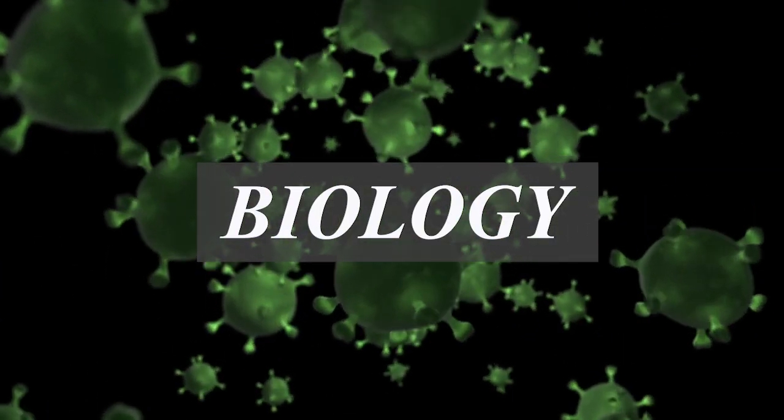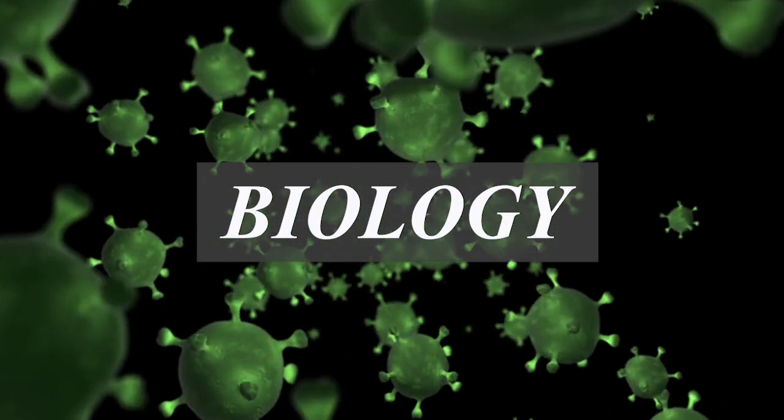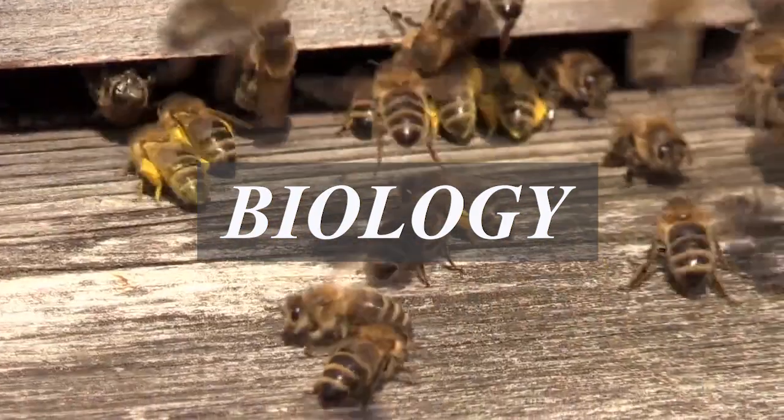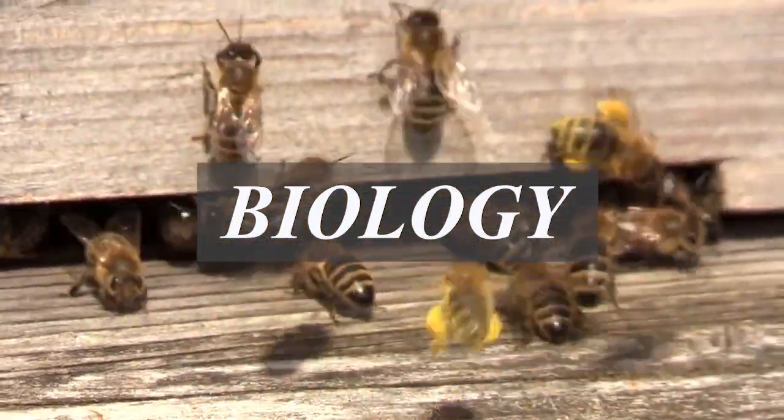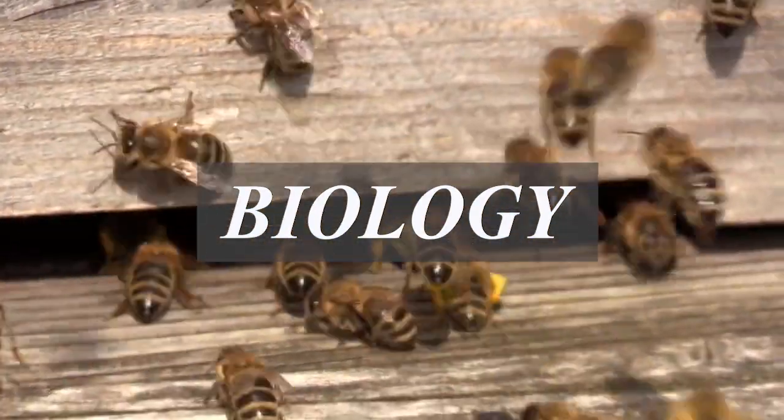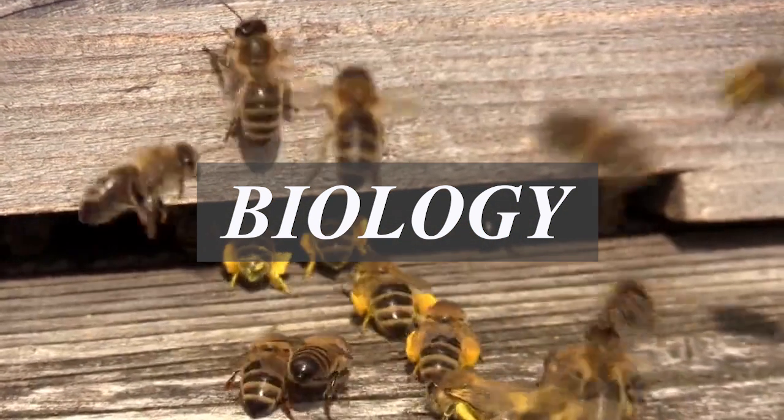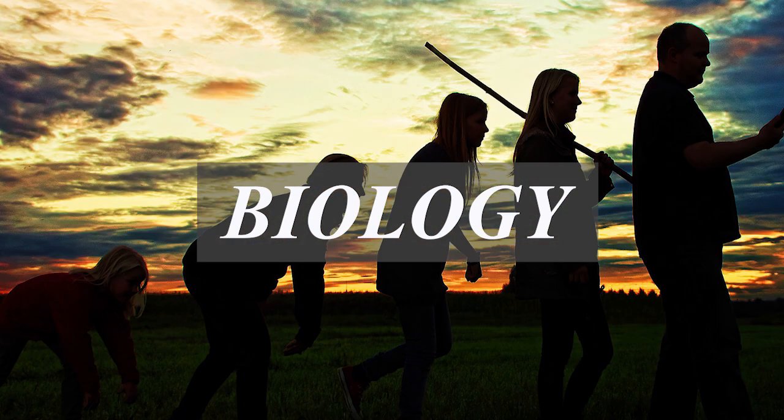In biology, there have been numerous incongruous behaviors. For example, consider the case of worker bees that slog their entire life to nourish the queen bee and never mate. Evolutionary game theory has been used to explain such inconsistent behaviors.